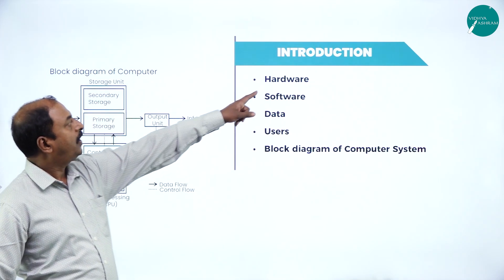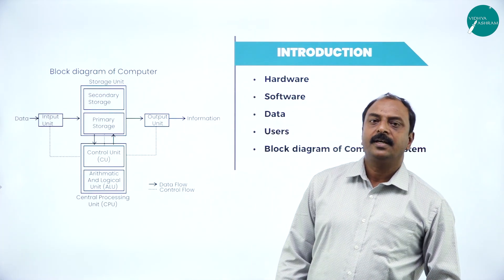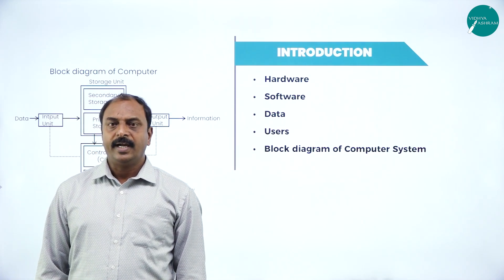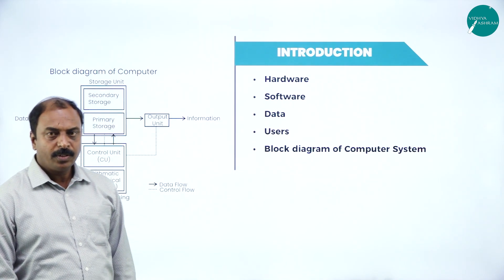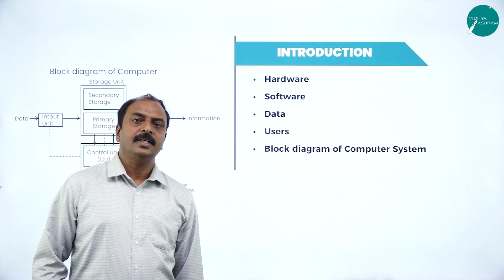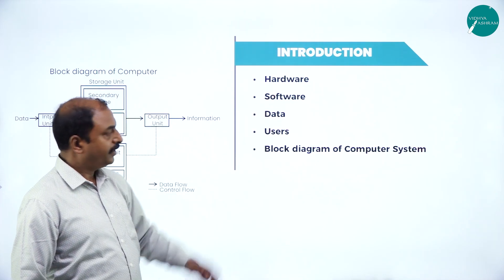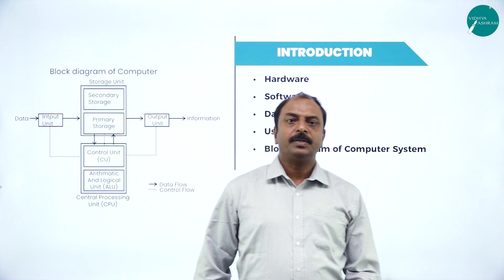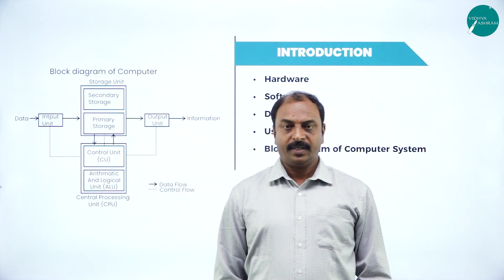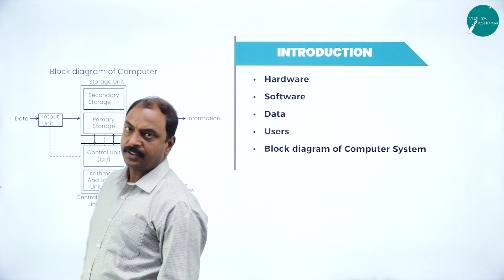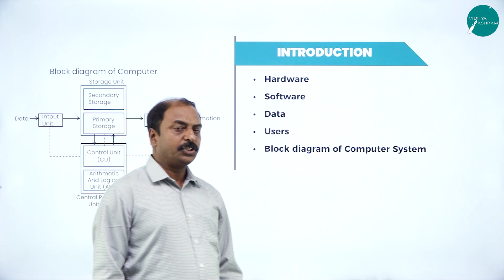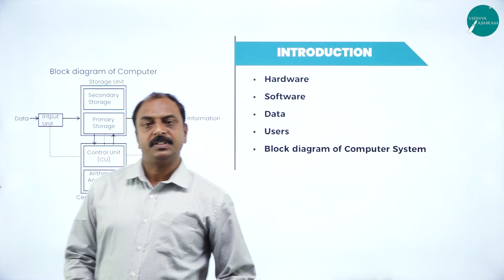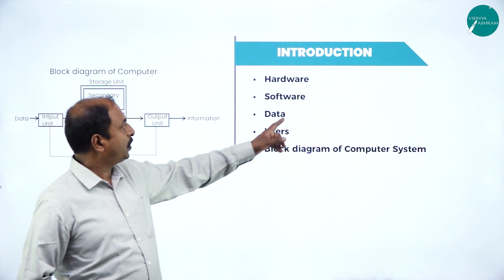Now look at the next definition: hardware. The hardware is the physical component of a computer system which we can touch and feel. Examples include keyboard, mouse, monitor, and CPU. Next is software. Computer programs are called software. Programs are a set of sequential instructions given to a computer to perform a specific task.